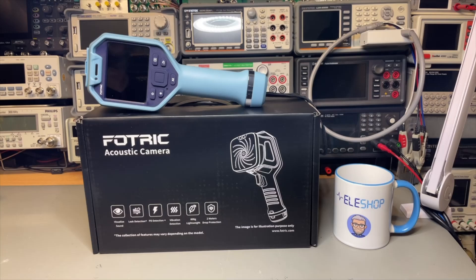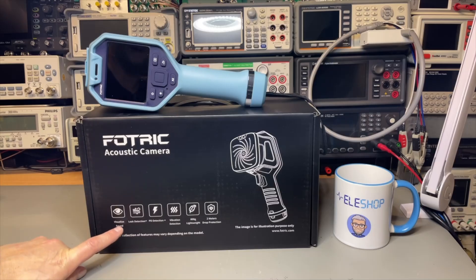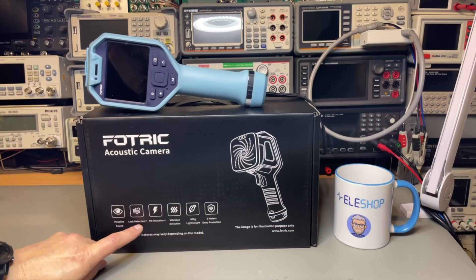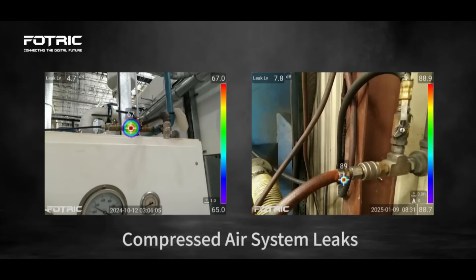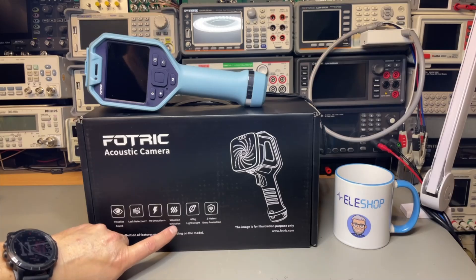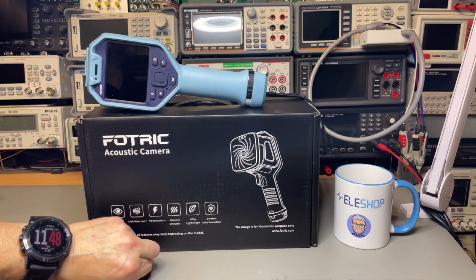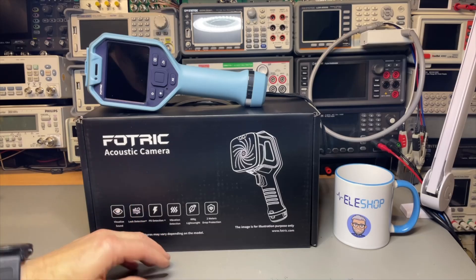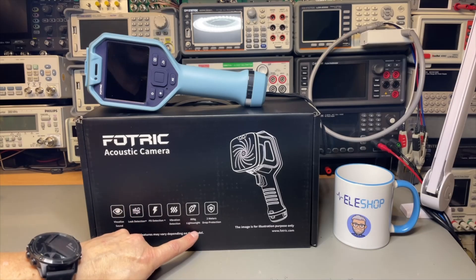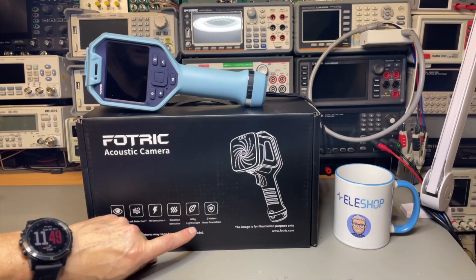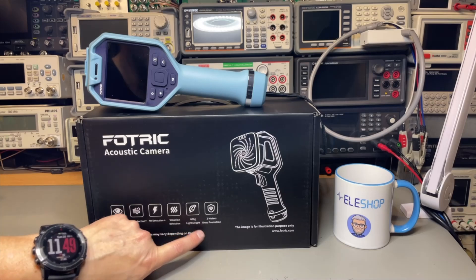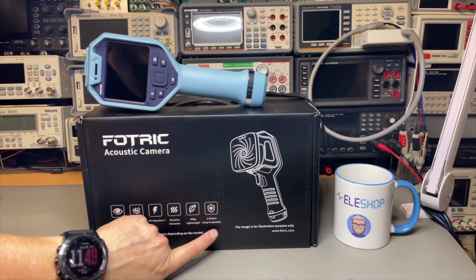This acoustic imager is from the brand Fortrek, it is the TD2. We can see on the box it visualizes sound and can do leak detection in industrial environments. It can detect vibration because it does high frequencies. It's very lightweight, below 800 grams, about 770, and strong enough to drop from two meters.